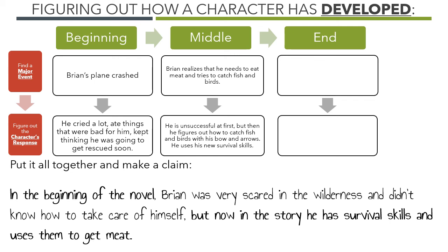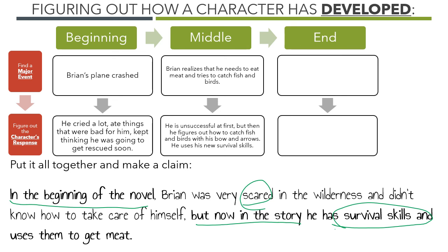A claim is like a statement — it's like an answer to a question. So if somebody asks how has Brian developed over the course of Hatchet, we could say: in the beginning of the novel, Brian was very scared in the wilderness and didn't know how to take care of himself. But now in the story, he has survival skills and uses them to get meat. We can show how he was in the beginning and how he is now. On the next slide, I'm going to ask you to think about Elijah's responses in the story Shades of Silence — how has his character developed over the course of the passage?